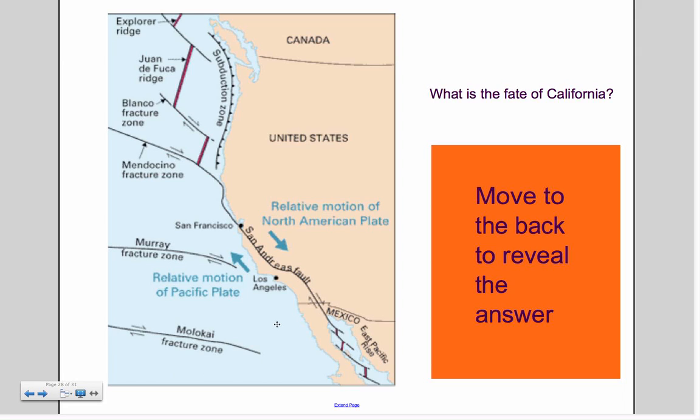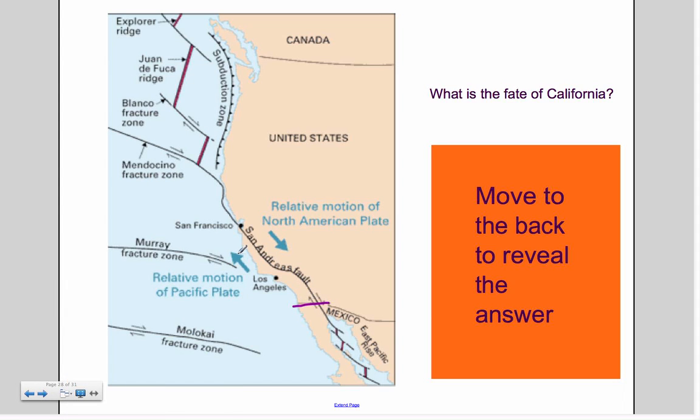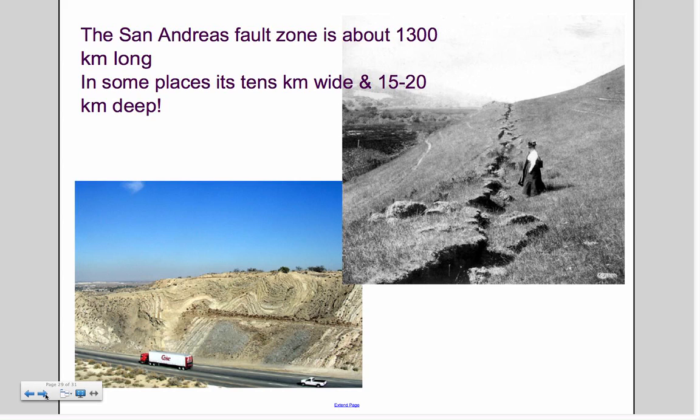People have said that California is eventually going to fall off into the ocean. Well, this isn't really true. What will happen eventually, and this is probably when the cockroaches rule the planet and have world domination, the bottom part of California, all of this area here will eventually move up and out into the ocean. And we'll have kind of like another little island sitting out there.